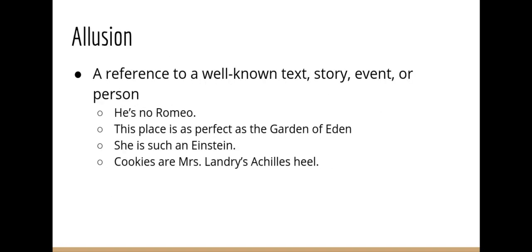Next is allusion — not illusion with an 'i.' An allusion is a reference to a well-known text, story, event, or person. Examples: 'He's no Romeo' refers to Romeo and Juliet, meaning someone is not romantic. 'This place is as perfect as the Garden of Eden' alludes to the Christian Bible. 'She is such an Einstein' alludes to Einstein, who we all know is very smart. For it to be an allusion, it needs to be well known. 'Cookies are Miss Landry's Achilles heel' alludes to Achilles and his weak spot — meaning cookies are Miss Landry's weakness.